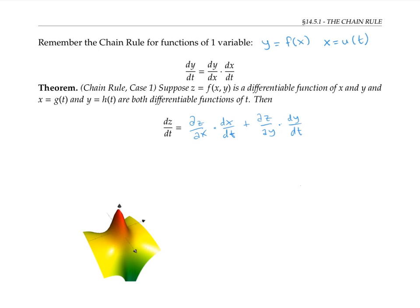A useful way to remember this formula is to draw a tree of variables. Z is a function of x and y, and x and y are both functions of t.